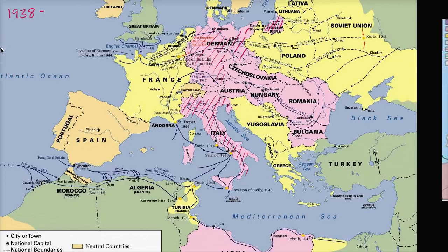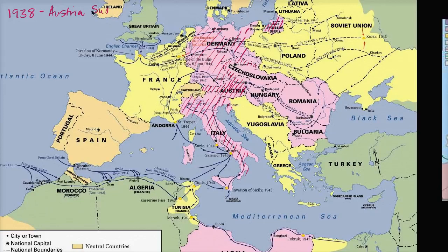You also have the takeover of the Sudetenland in Czechoslovakia. The future Allied powers kind of appease Hitler — they don't want to start another war; they all still remember World War I being really horrible. So Hitler is able to satisfy his aggression. In 1938, Austria and the Sudetenland are taken over by Germany.